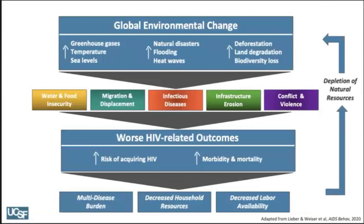At the bottom, HIV-related morbidity and mortality can contribute to decreased household resources and lower labor availability, which then feeds back to cause further depletion of natural resources through deforestation, land degradation, and overfishing, creating a vicious cycle towards worse local ecological harm. I'm going to be using this framework to talk through some research findings.